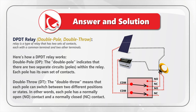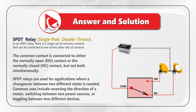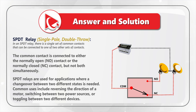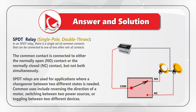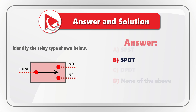Neither SPST nor DPDT are the correct answer. There is another type of relay — SPDT, which stands for single pole, double throw — which is shown on the original picture. In an SPDT relay, there is a single set of common contacts that can be connected to one of two other sets of contacts. The common contacts are connected to either the normally open (NO) contact or the normally closed (NC) contact, but not both simultaneously. SPDT relays are used for applications where a changeover between two different states is needed, such as reversing the direction of a motor, switching between two power sources, or toggling between two different devices. So the correct answer here is Choice B: SPDT.